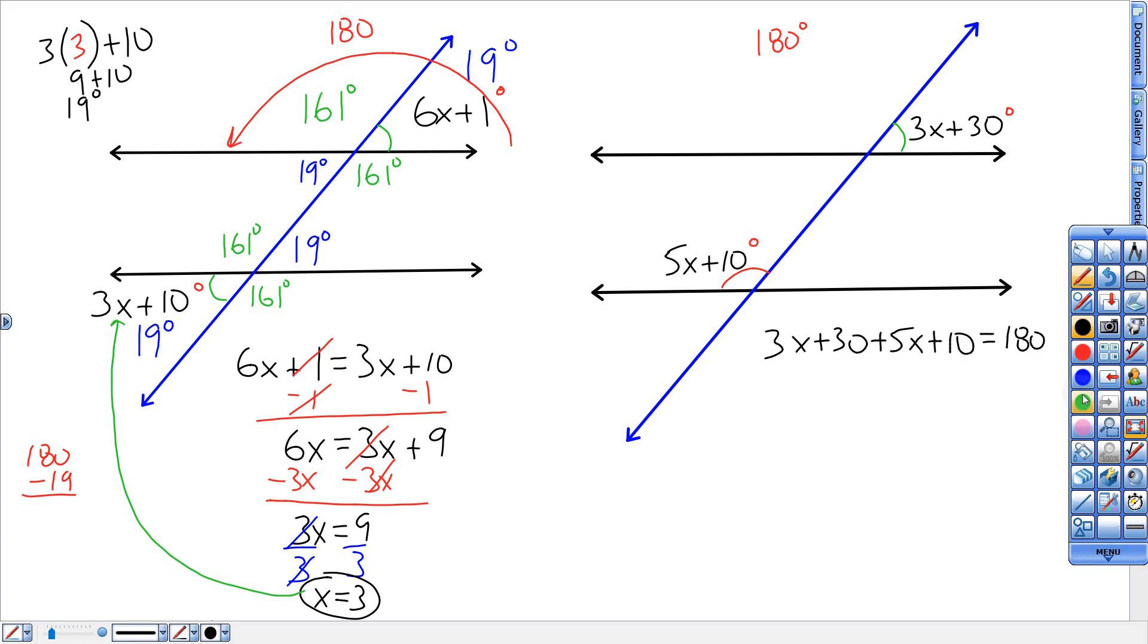So this problem, I need to combine like terms and then start my inverse operation. So 3x and 5x gives me 8x. 30 plus 10 gives me 40. And now I can start my inverse operations. Take away this 40 right here. Bring down this 8x. This is 140. Divide by 8 gives me what just the x number is. It doesn't give me the angles, but just the x number.